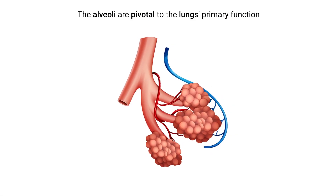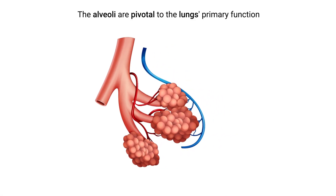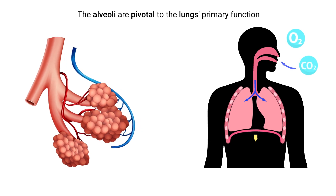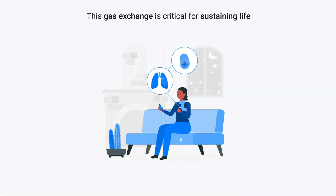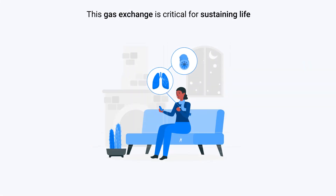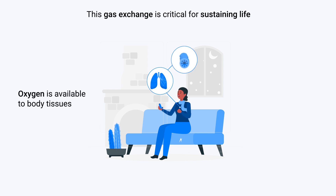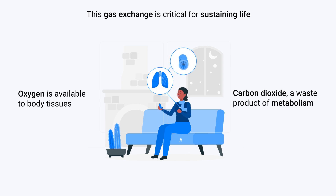The branching tubes ultimately lead to small balloon-like structures called alveoli. The alveoli are pivotal to the lungs' primary function: the exchange of gases — specifically oxygen and carbon dioxide — between the lungs and the bloodstream. This gas exchange is critical for sustaining life, ensuring oxygen is available to body tissues and that carbon dioxide, a waste product of metabolism, is expelled from the body.